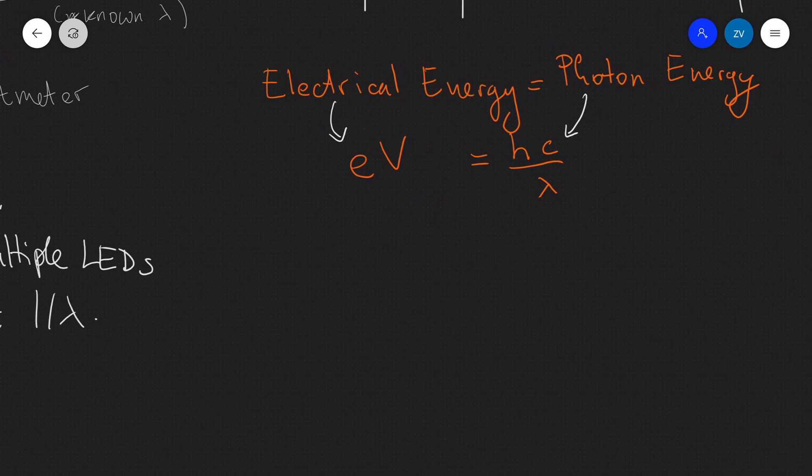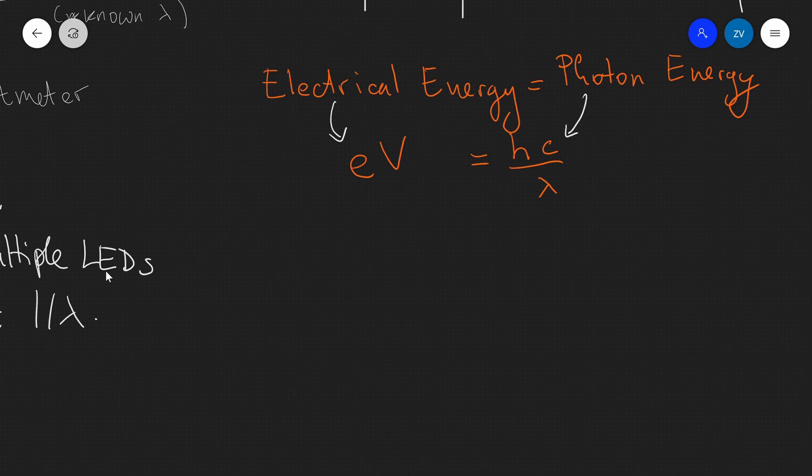Now, what we can do is just rearrange the above equation for the potential difference. And what we're going to get is that the potential difference is equal to hc over e. And rather than writing lambda underneath here, what I'm going to do is just write it down as times 1 over lambda. Mathematically, it's exactly the same as if I just had hc over e times lambda. And also what I'm going to do is write plus 0.